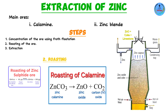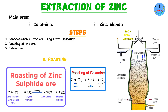If you heat calamine, it decomposes — most carbonates, with the exception of potassium and sodium carbonates, break down when heated. So zinc carbonate decomposes to form zinc oxide (ZnO) plus carbon dioxide (CO₂). For zinc blende, roasting zinc sulfide causes it to react with oxygen, forming zinc oxide (ZnO) plus sulfur dioxide (SO₂).